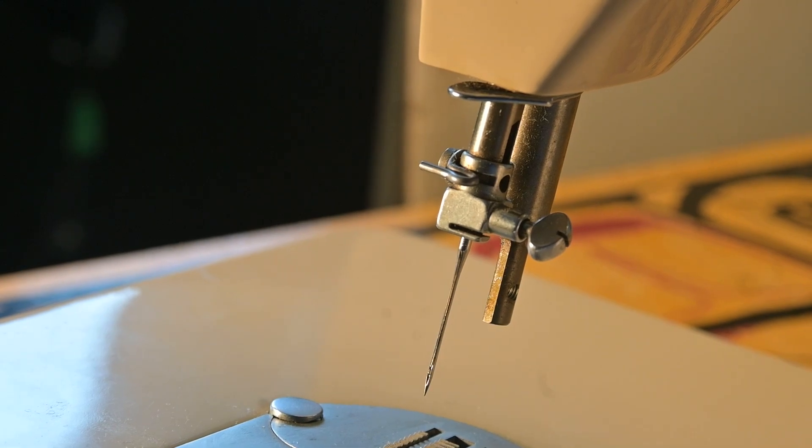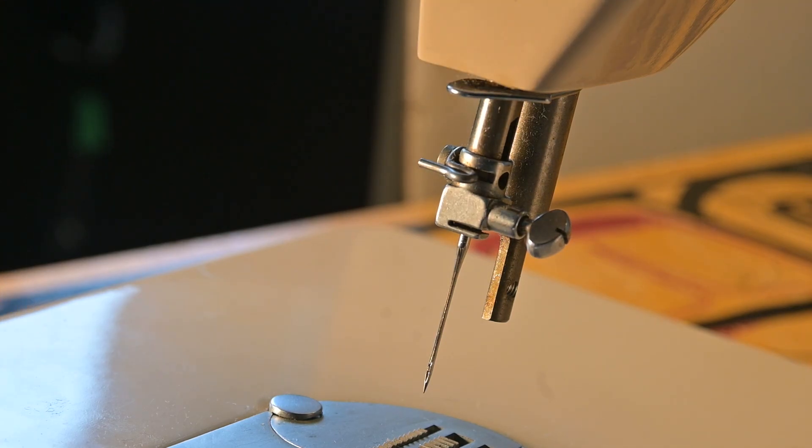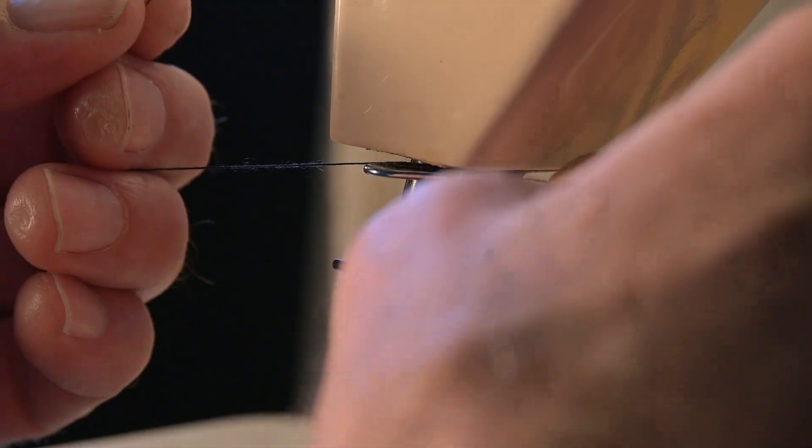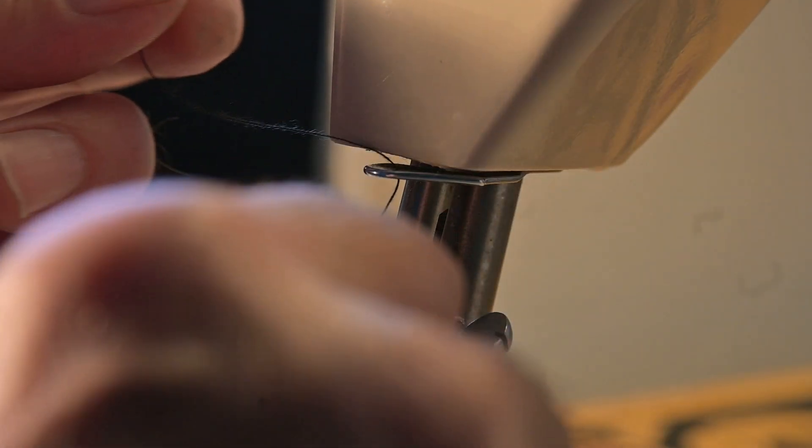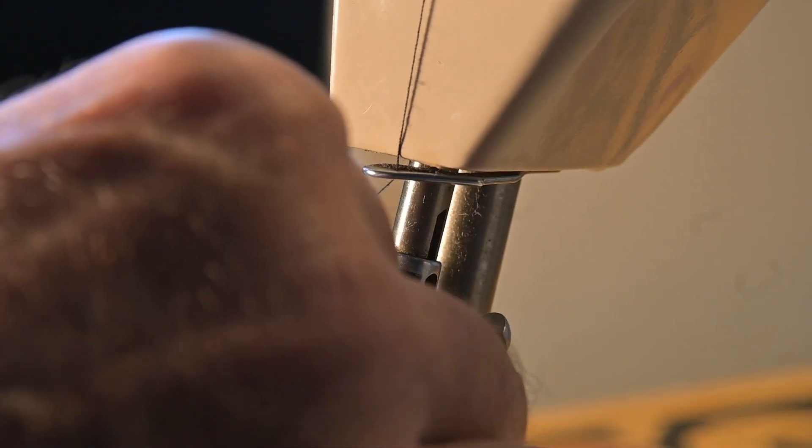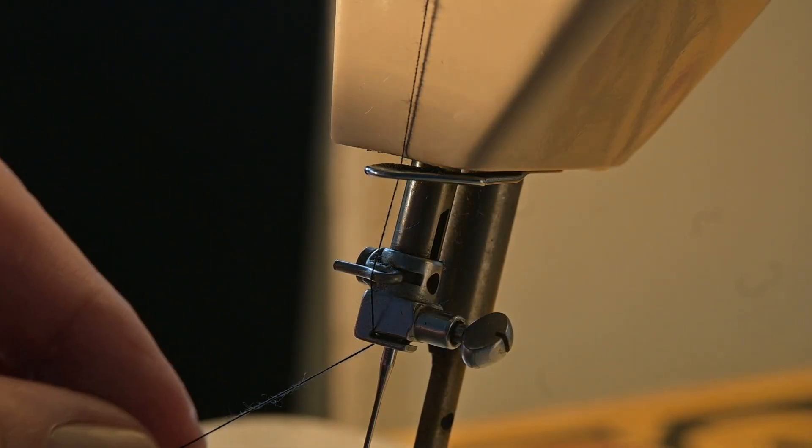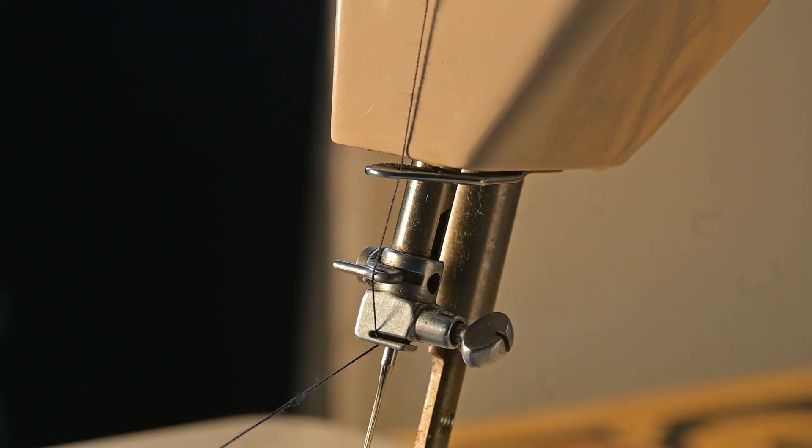While we're here, I would like to let us have another view at how we thread this lower part. We're going to have the thread come down and slide that across there, let it get looped in, and then bring it down to this loop here. And then we have our last one before the needle, which is down here, like that. Now we're ready to thread the needle.